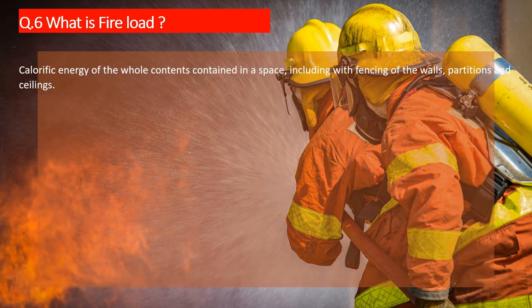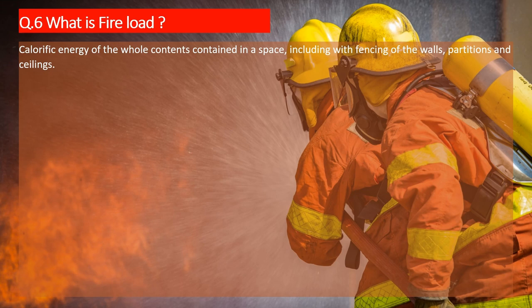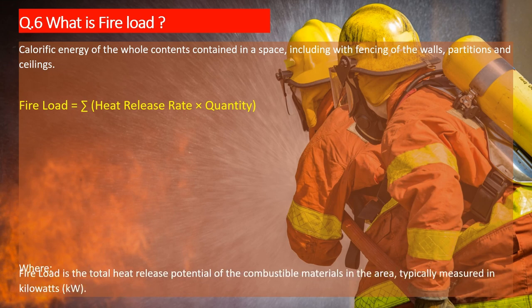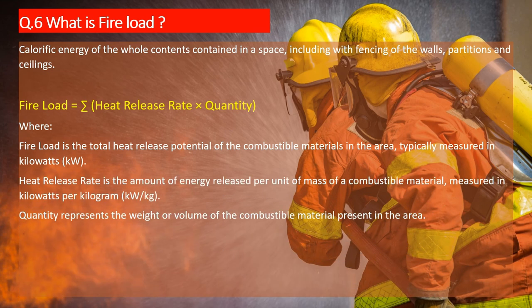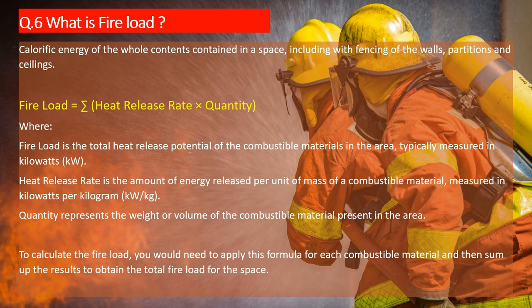Question number 6: What is fire load? Fire load is the calorific energy of the whole content contained in a space, including the fencing of the walls, partitions, and ceilings. The formula for fire load calculation is: sum of the heat release rate multiplied by its quantity. Fire load is the total heat release potential of the combustible material in the area, typically measured in kilowatts. Heat release rate is the amount of energy released per unit of mass of combustible material, measured in kilowatts per kilogram. To calculate fire load, apply this formula for each combustible material and sum up the results to obtain the total fire load for the space.